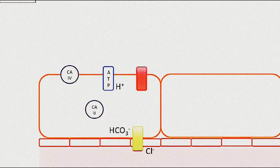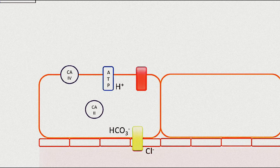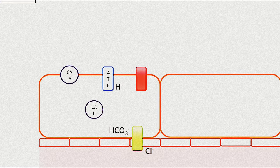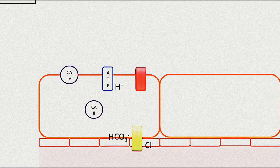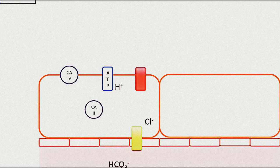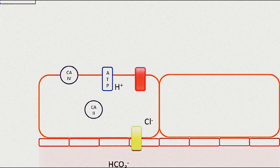Chloride from the circulation joins up with the bicarbonate at a transporter and is exchanged. Chloride goes into the cell and bicarbonate is reabsorbed into the blood.